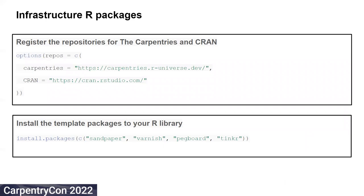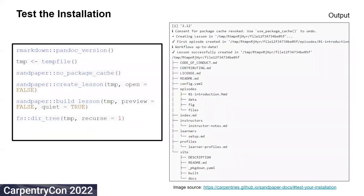After you have the template ready, you need to install some packages in your R library and also register the repositories for the Carpentry's and CRAN. Next, you need to test the installation of the packages and whether they are properly creating the lesson's structure. On running the testing commands available on this slide, you should be able to confirm whether all these components work well together.